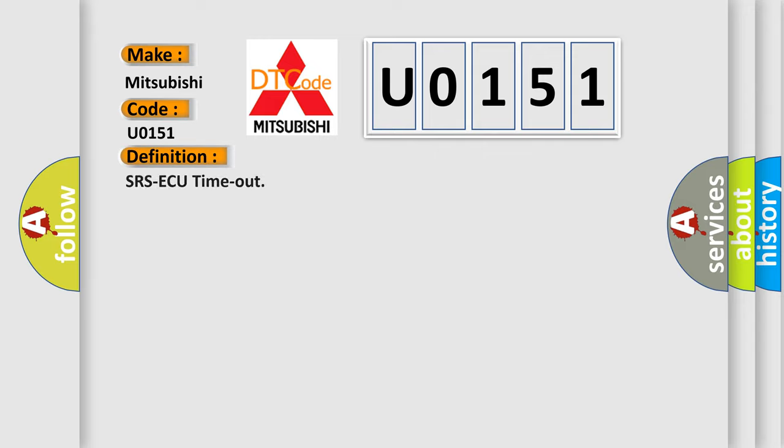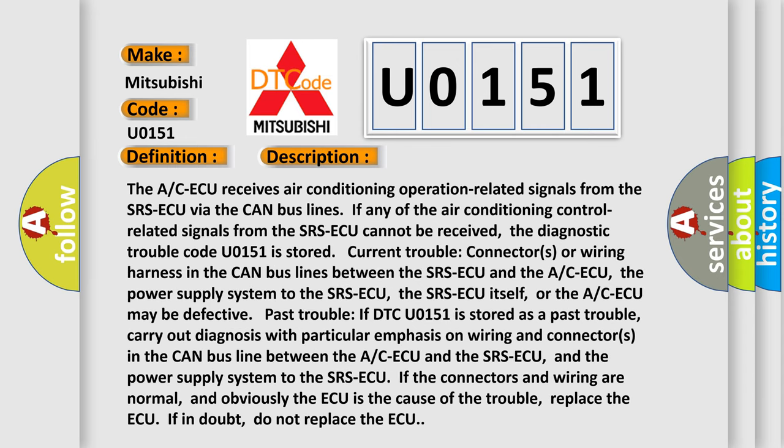The basic definition is SRSAQ timeout. The ACAQ receives air conditioning operation-related signals from the SRSAQ via the CAN bus lines. If any of the air conditioning control-related signals from the SRSAQ cannot be received, the Diagnostic Trouble Code U0151 is stored. Current trouble: connectors or wiring harness in the CAN bus lines between the SRSAQ and the ACAQ, the power supply system to the SRSAQ, the SRSAQ itself, or the ACAQ may be defective.